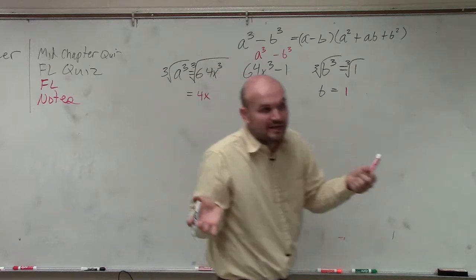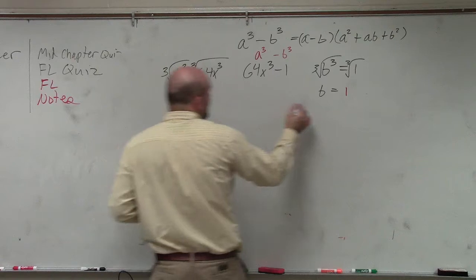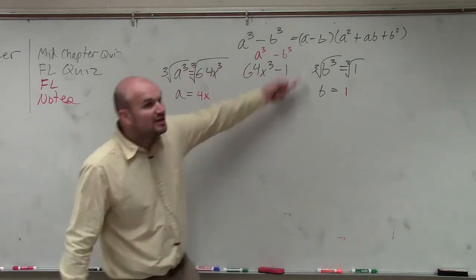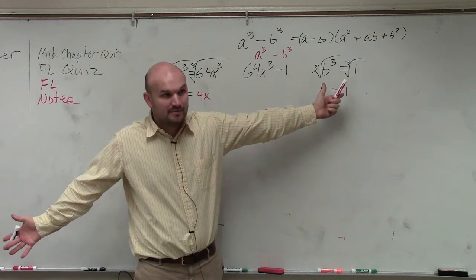So now, all you're simply doing is taking these values for a and b. This is what a equals, that's what b equals. And just plug them into the formula, and that's it. And then you have it factored. Anybody have any questions on that? No.